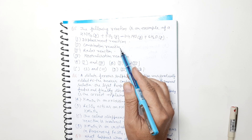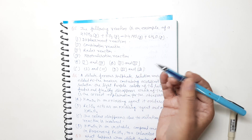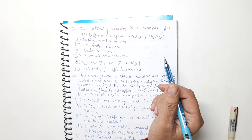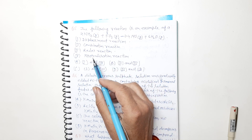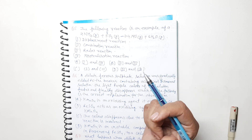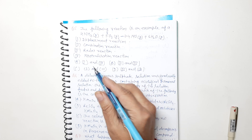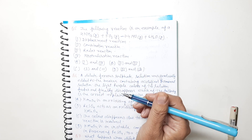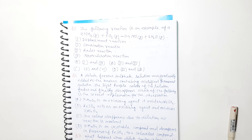A combination reaction is when two elements combine — like C + O2 → CO2. A redox reaction involves both oxidation and reduction occurring simultaneously. A neutralization reaction is when an acid reacts with a base — acid and base react to neutralize each other.